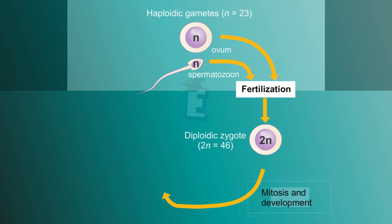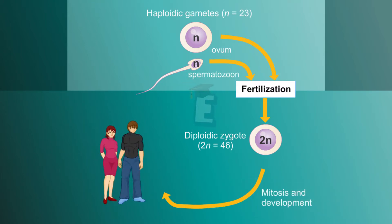The second phase continues from zygote to fully grown multicellular human being. At this stage, the number of human chromosomes will remain at 46, grouped in 23 pairs. Besides undergoing growth process, human body produces gametes for the next life cycle.